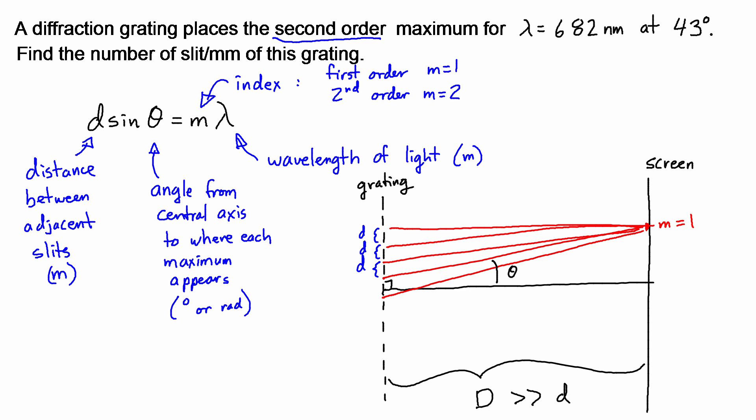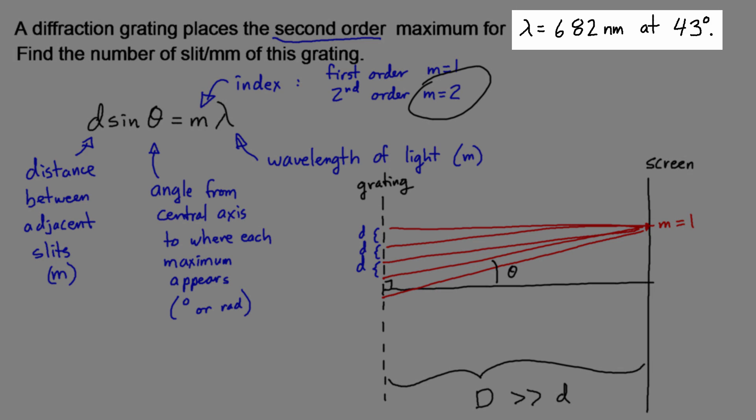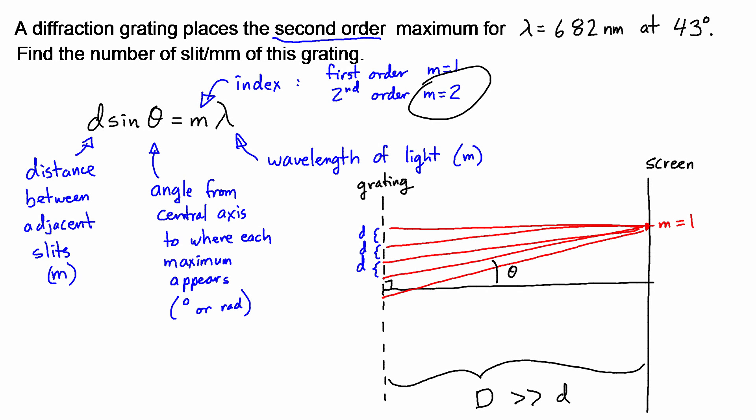So the question then is, how do we use this equation? Well, we know that the second order maximum means that we're going to use m equal 2. d is not given. The angle is given though, and the wavelength is given. Now, we have to find the number of slits per millimeter, and so let's look at that for a second.